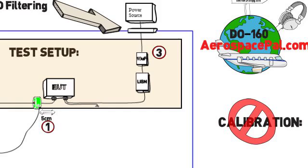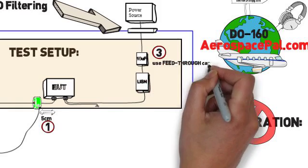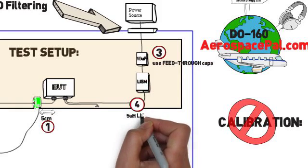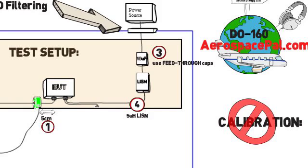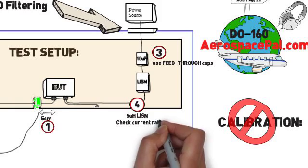Number three, your 10 microfarad cap should be the feed-through style with chassis as its case and not the leaded kind. Number four, your LISN should be the 5 microhenry style, not the MIL style which is 50 microhenrys, and they should be properly current rated based on your EUT current draw.